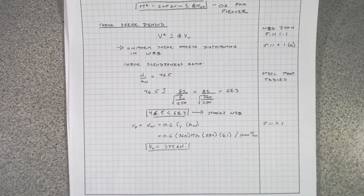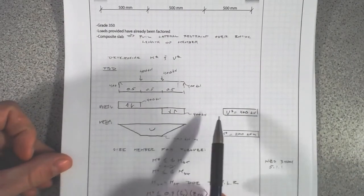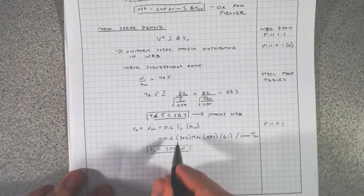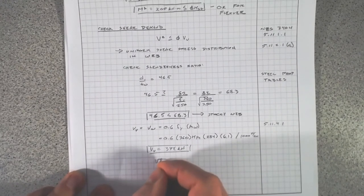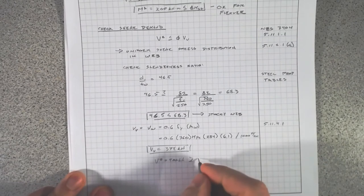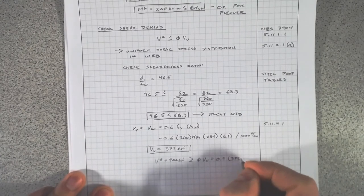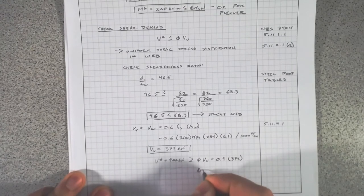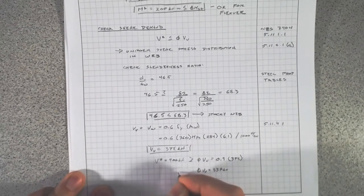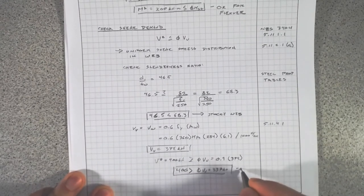Comparing to our demand: V* = 400 kilonewtons, but φVv = 0.9 × 374 = 337 kilonewtons. Since 400 kilonewtons is greater than 337 kilonewtons, the 310UB40.4 is not adequate for shear. We need to go up and find a larger section.